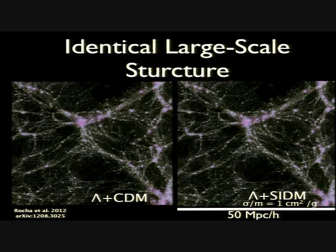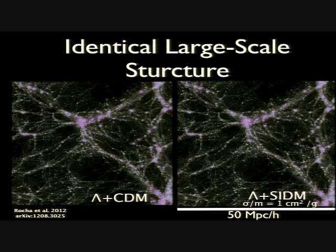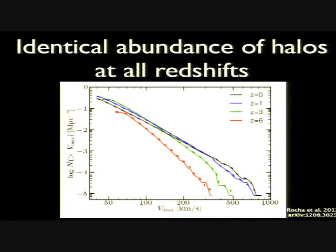For large scales, we find no difference at all. This visualization shows 50×50×10 Mpc slices of our 50 Mpc box — on the left is ΛCDM, on the right is SIDM with sigma/M = 1. Visually there's no difference. In a more quantitative way, we plot the Vmax function — the number of halos as a function of Vmax — and solid is standard CDM while dashed is SIDM with sigma/M = 1. We don't see any difference even at high redshift.